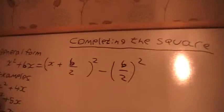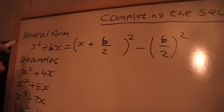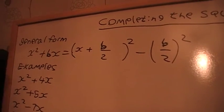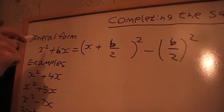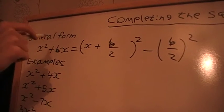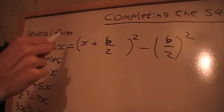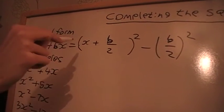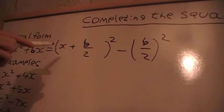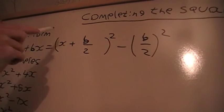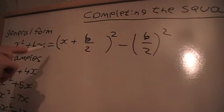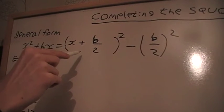The general idea of completing the square is we'll have some expression of this form here: we've got x squared plus some constant times x, and we want to write it in this way here. So what we want to do is put a perfect square. This part here is called a perfect square.